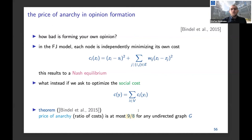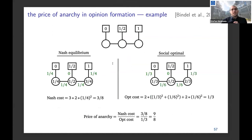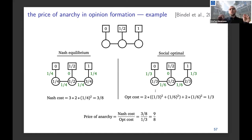Here's an example where the 9/8 ratio is tight. We have three users with innate opinions 0, 1/2, and 1. In the Nash equilibrium, the user in the middle keeps expressed opinion 1/2, while the left-wing and right-wing users go to opinions 1/4 and 3/4. The optimal social cost would be achieved if they moved just slightly closer to 1/2. This is the tight example showing the 9/8 ratio for selfish versus optimal behavior.